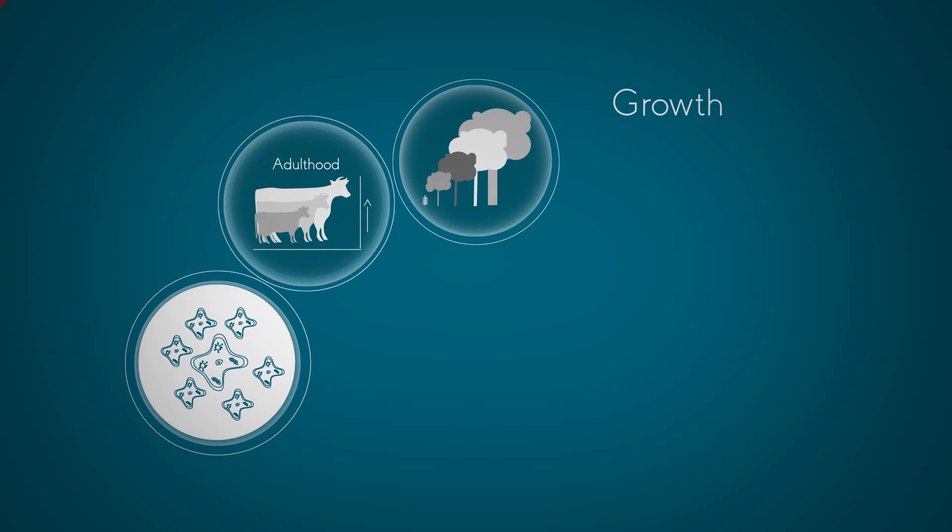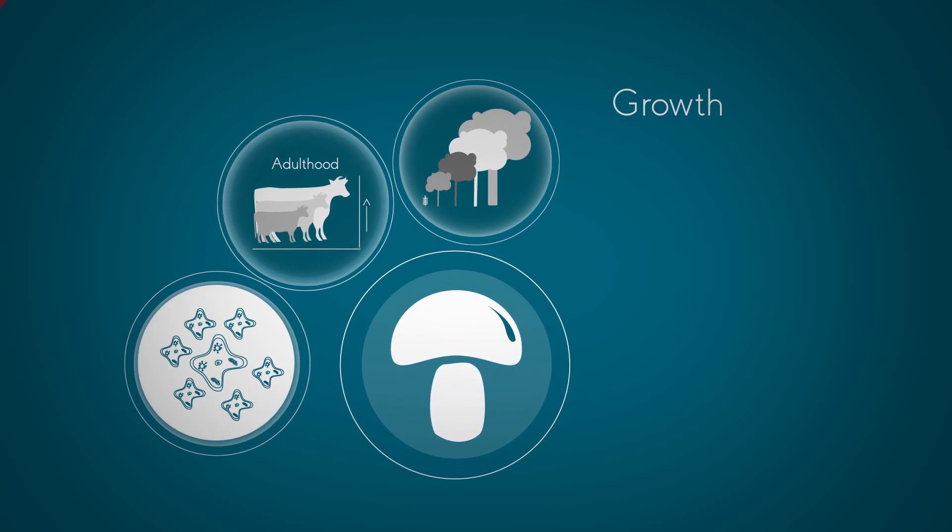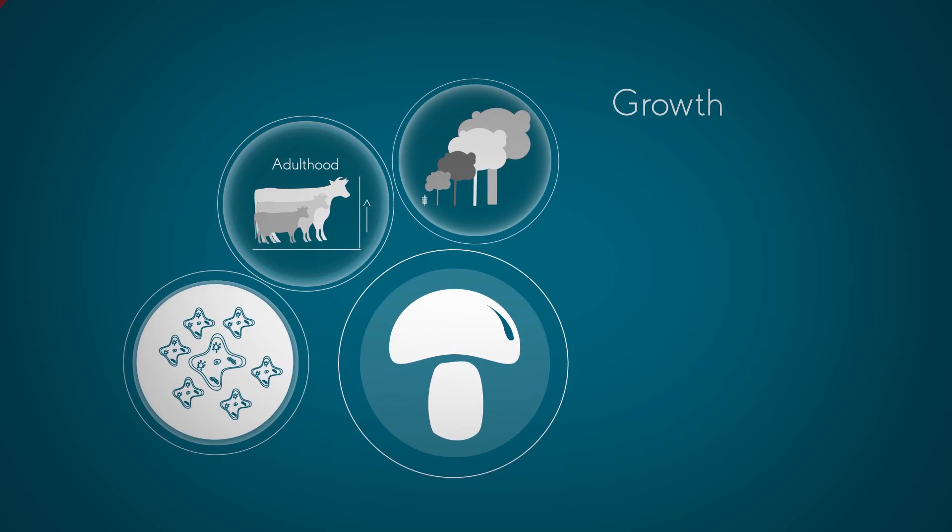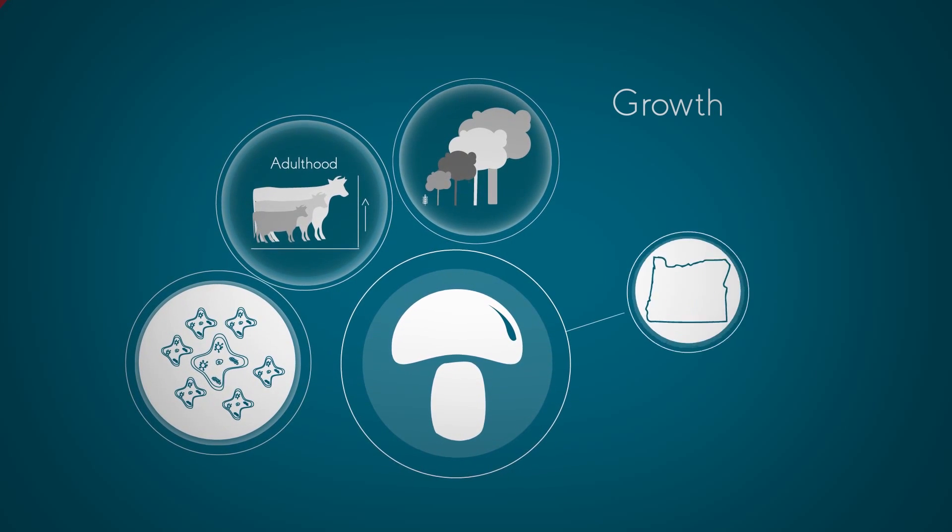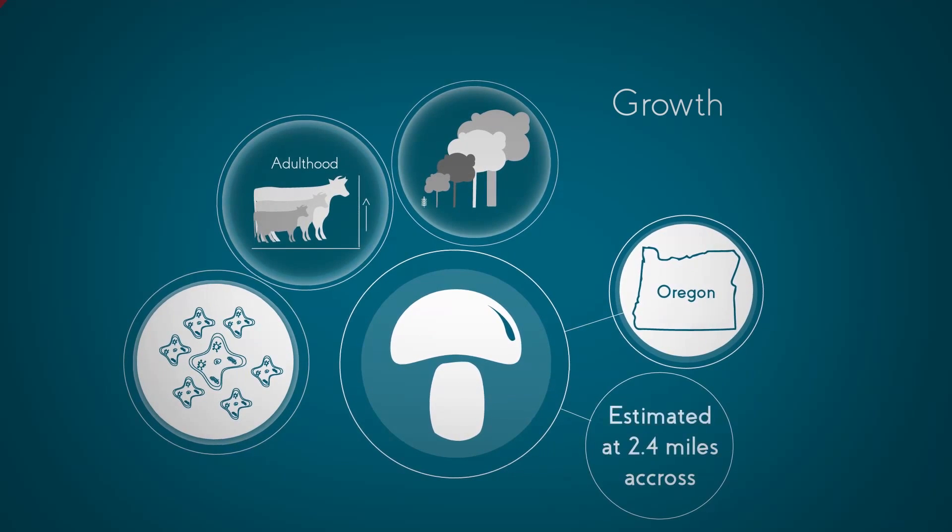In fact, the biggest living organism on the planet isn't a plant, it's a fungus. It's a type of honey fungus growing in Oregon, and is thought to be 2.4 miles across.